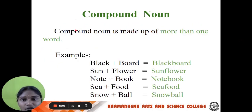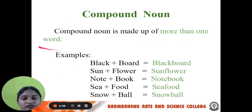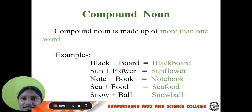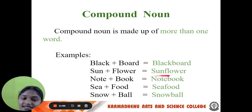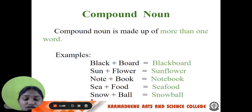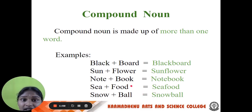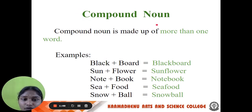Next one, compound noun. A compound noun is made up of more than one word. For example, black plus board = blackboard; sun plus flower = sunflower; note plus book = notebook; tea plus pot = teapot; snow plus ball = snowball. So a noun which is made up of more than one word is called a compound noun.